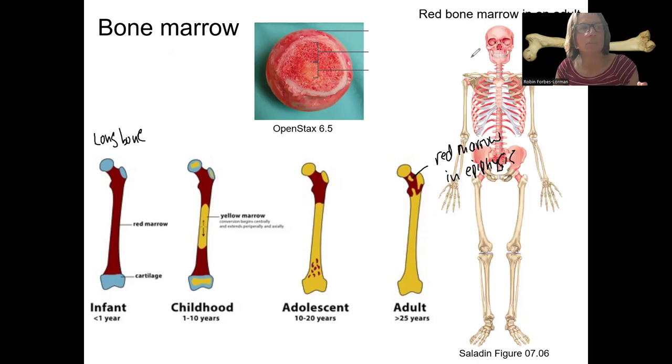Would be the skull, ribs, pelvis, vertebrae. And again, that's in addition to these two epiphysis. And that over developmental time changes.